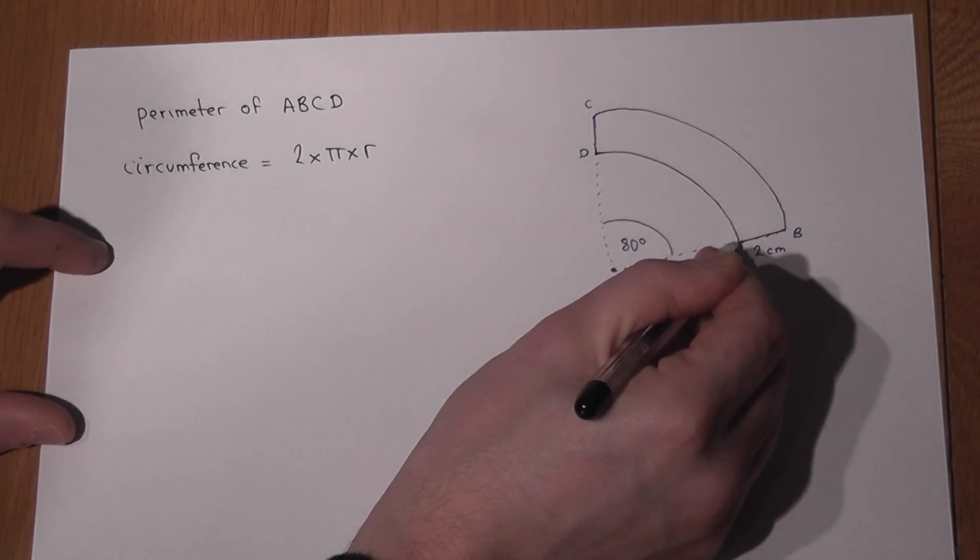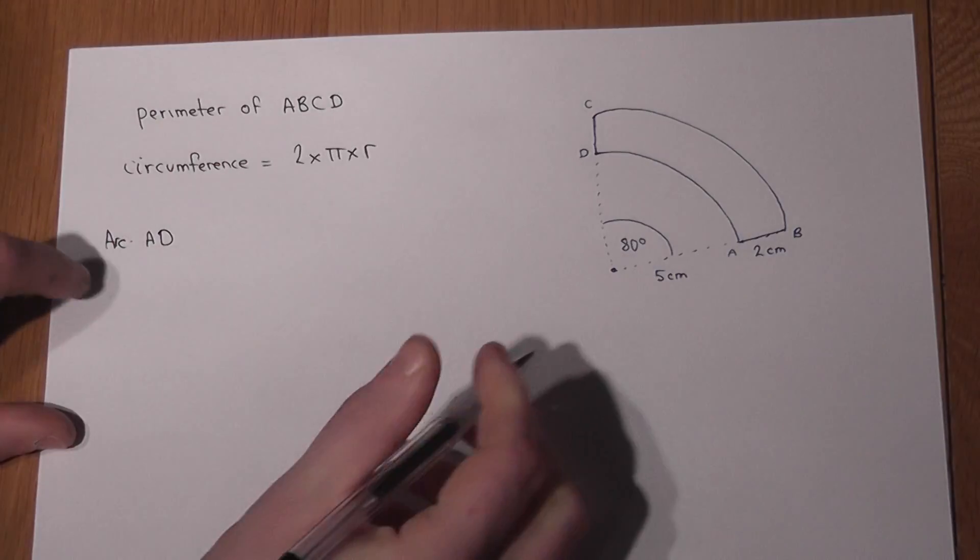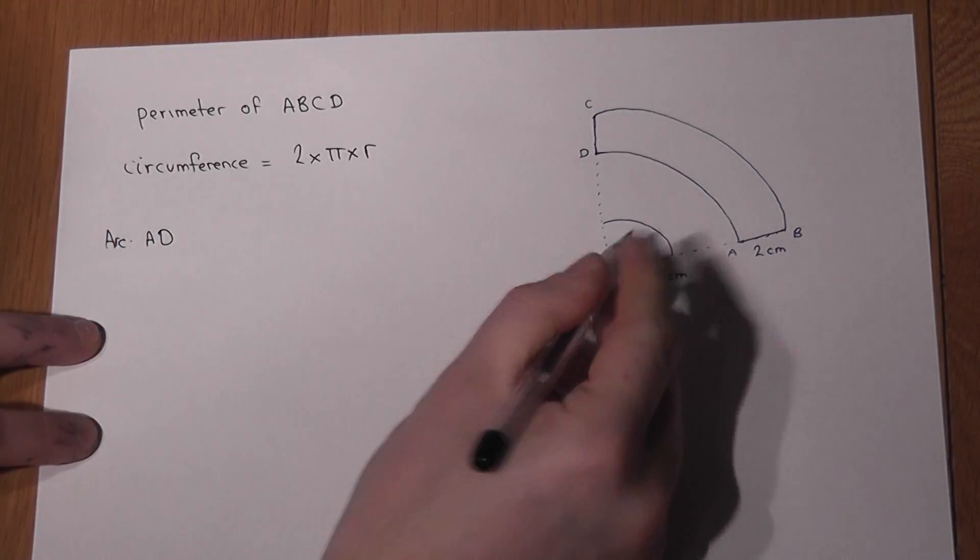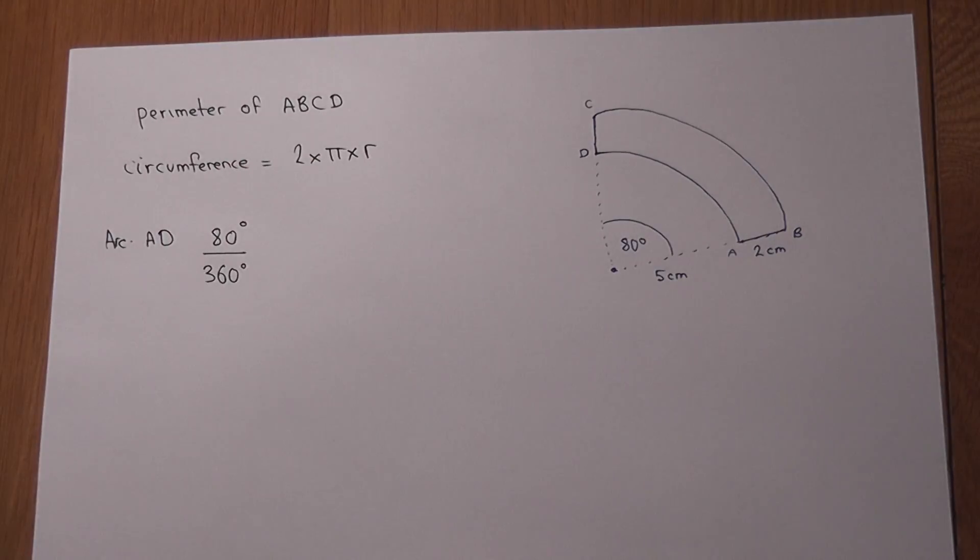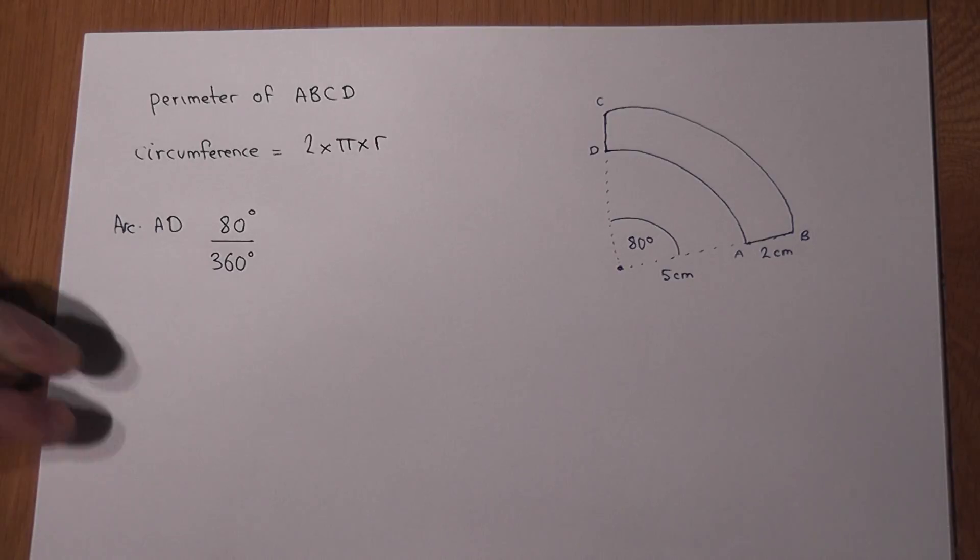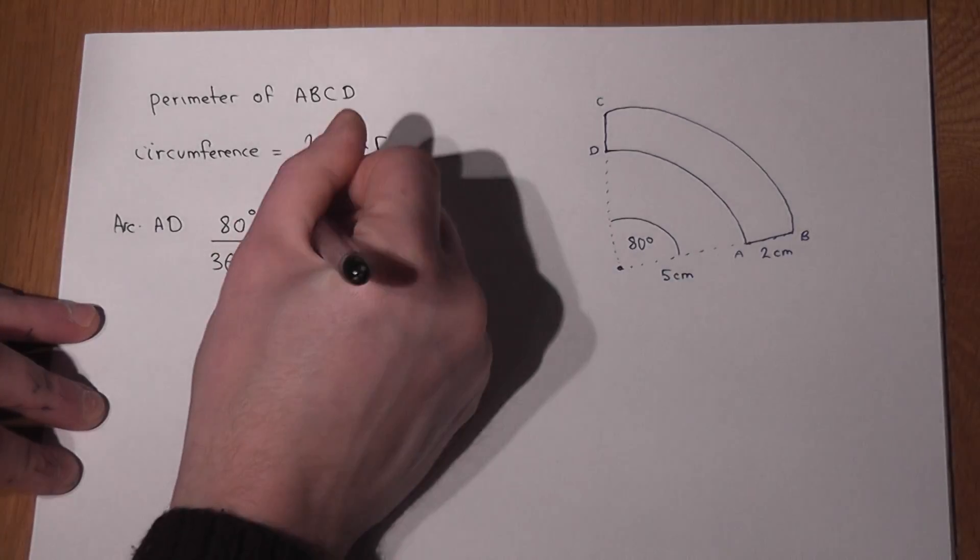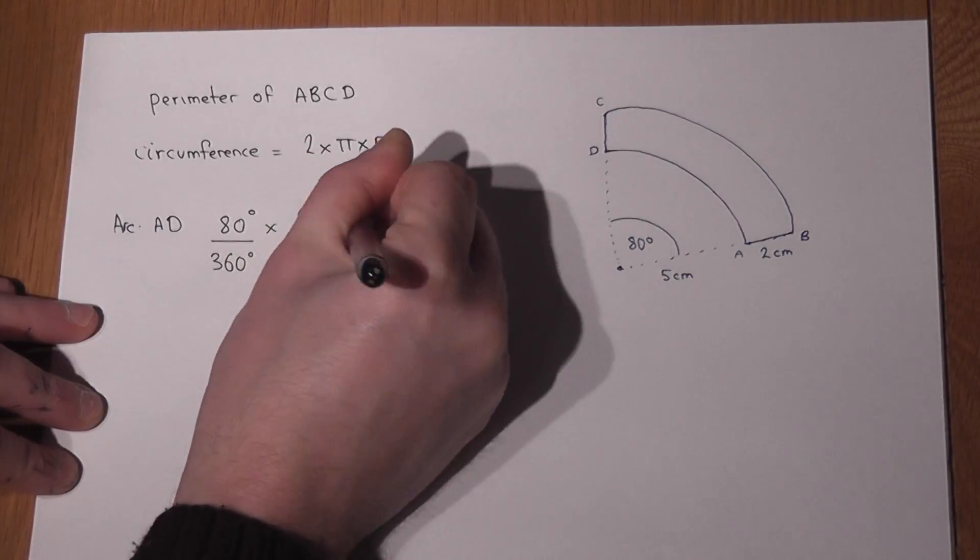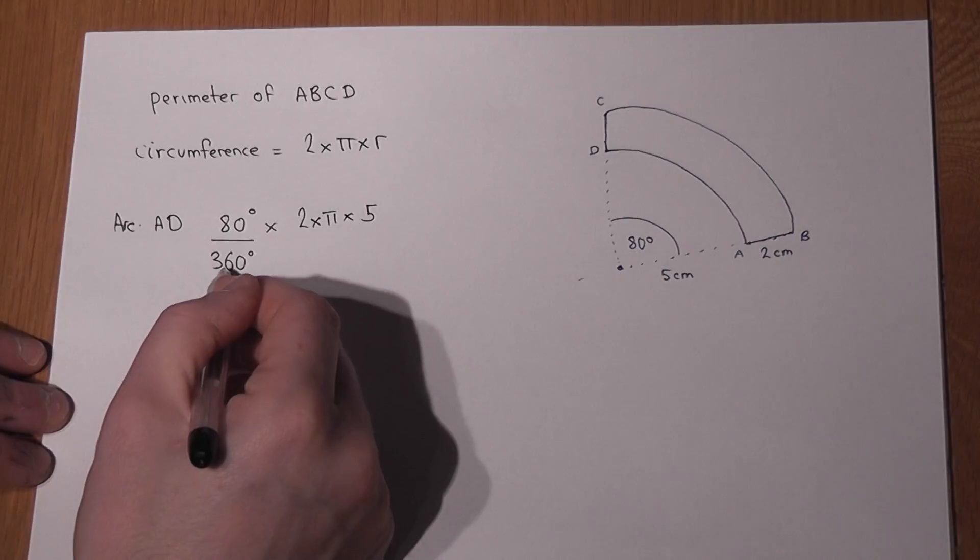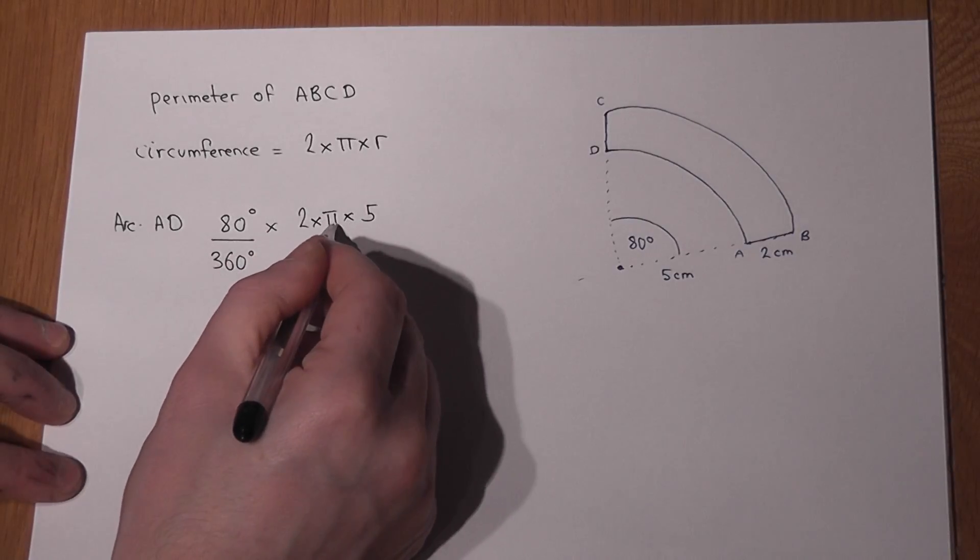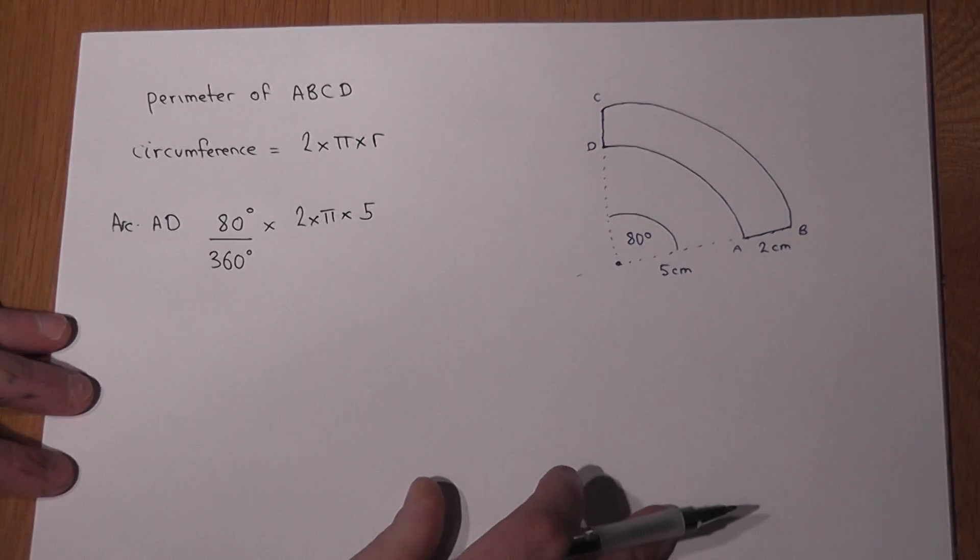So if I look at the arc AD, it's 80 out of 360. It is that fraction of a full circle. And its full circumference, if it was a full circle, would be 2 times pi times its radius. So 80 over 360 times 2 times pi times 5 is a fraction of a full circle which gives me just that little length A to D.